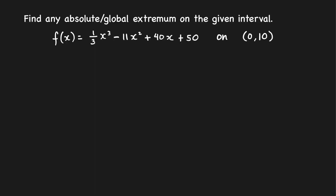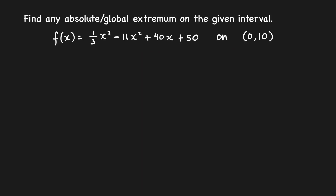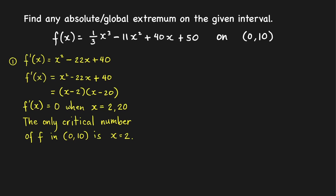Let's find any absolute or global extremum of the following function on the open interval (0, 10). First, we find the derivative because we want to find the critical numbers in this open interval. The derivative equals one-third times 3x², which is x², minus 22x plus 40. Note that this derivative always exists because it's a polynomial. To find the critical numbers, we find where this derivative equals 0.